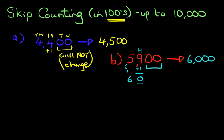So 5,900, the number after that, if we are counting in hundreds, is 6,000. It's very simple. Okay, we're going to look at one more.